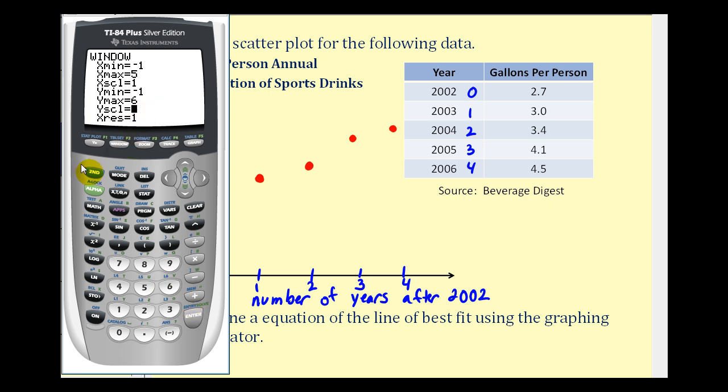So now if we press second, y equals, here's where we can turn the stat plot on. So we press enter. It's blinking on and on, so if we just press enter, it's already on the scatter plot option, the first option here. L one and L two, or x and y, and the points will be little squares. So if we press graph now, we have a nice scatter plot that resembles what we did by hand, but notice how I have an equation showing up. That's because I have an equation in y one. So if I press y equals, I'm going to clear out any equations I have in here.